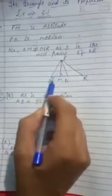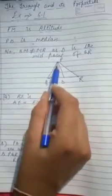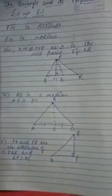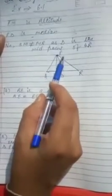So first question, the diagram is given here. We have to identify what is PM. PM is an altitude. The part in a triangle, or a line drawn within the triangle from a vertex to the other side - if a line is drawn from one corner to another side and it makes a 90 degree angle, then it will be an altitude.